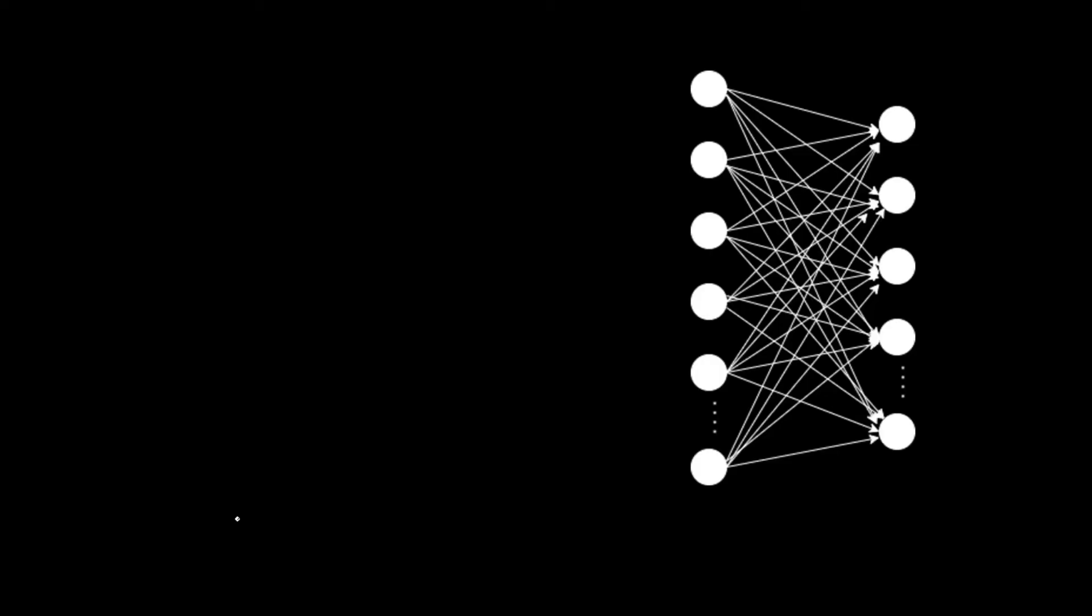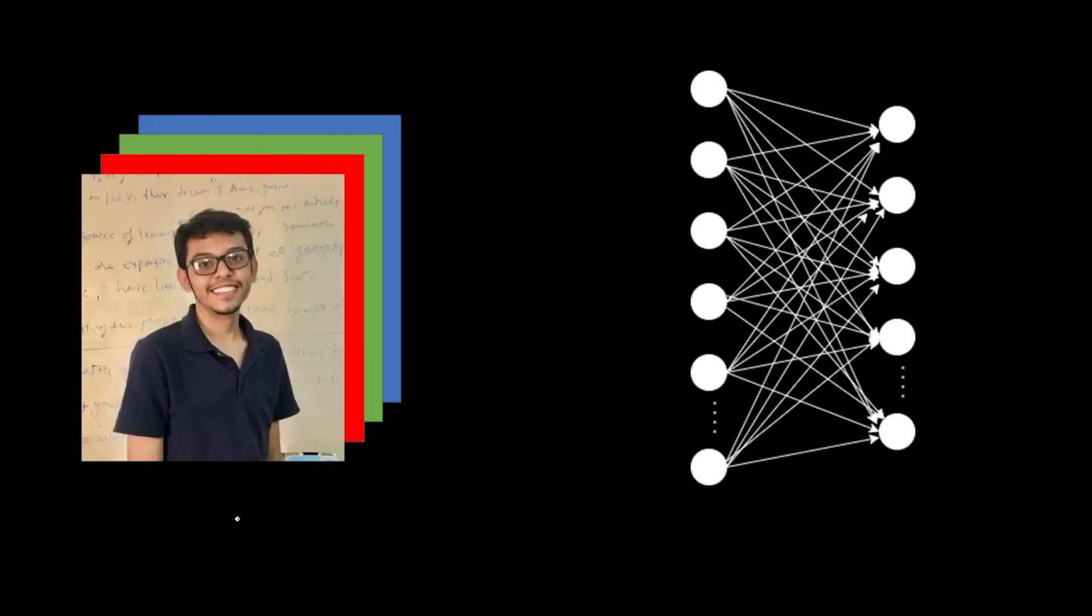Let us see what is the drawback of using a simple neural network and why do we need a convolutional neural network in the first place. Let us say we are dealing with the image data set and it has colored images with red, green and blue channels, RGB channels, having the size of 1000 x 1000 pixels.